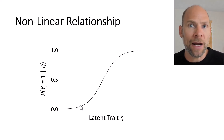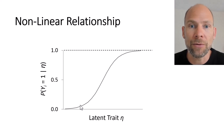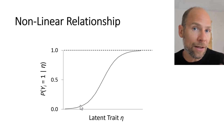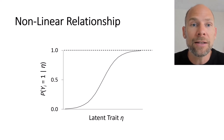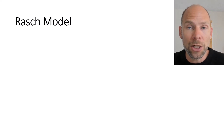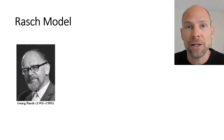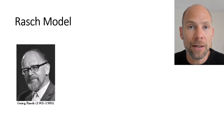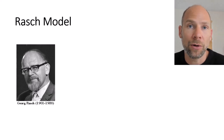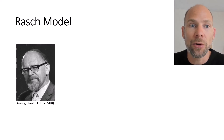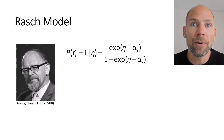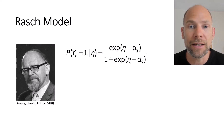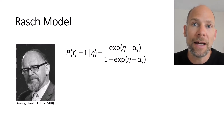How do we get this S-shaped function mathematically? The most common approach in IRT is a logistic regression relationship, also known as the Rasch model after Danish mathematician Georg Rasch who developed it. It is also called the one-parameter logistic model. The model equation gives the probability of solving item i given latent ability: the numerator is e raised to the power of (eta minus alpha_i), and the denominator is one plus that same exponentiation. This function produces the S-shaped curve.